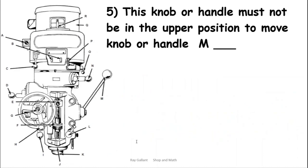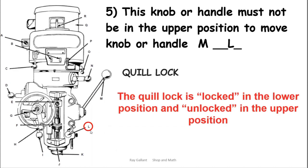This knob or handle must not be in the upper position to move knob or handle M. M is the quill feed. What in the upper position prevents this from moving? It's the lock. Don't move the quill when the lock is engaged. Have it pushed upward then move the lock.